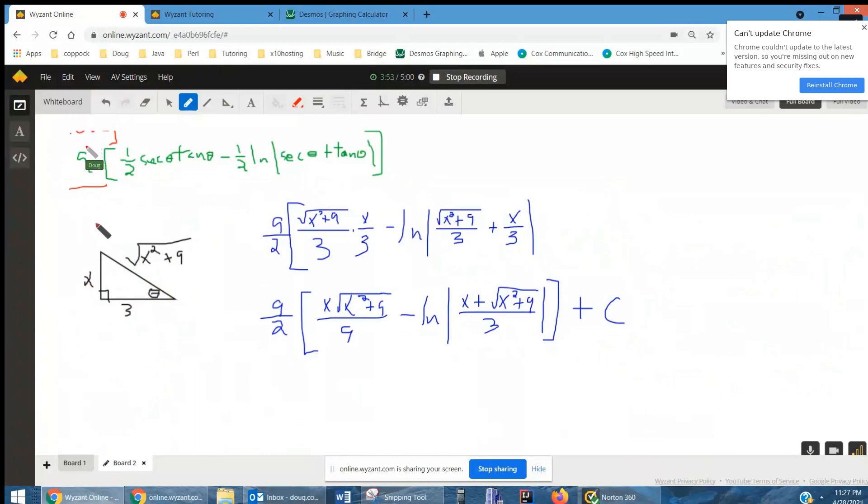Here's what we have so far. Secant of theta is the reciprocal of cosine. So it's the square root of x squared plus 9 over 3. That's what this is right here.